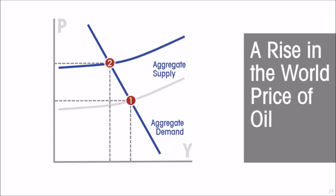Because the price level has to be higher, consumers are going to be cutting back on their consumption of domestic production, because it is now relatively more costly. So the price level in the economy goes up and the economy's GDP falls — the economy goes into a recession.